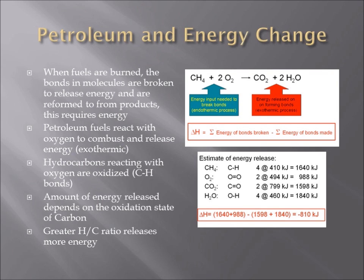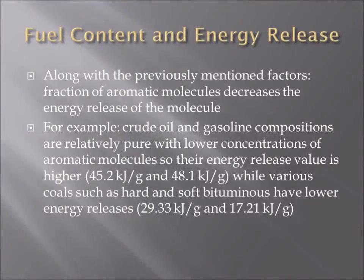The amount of energy released depends on the oxidation state of carbon. If the oxidation state is lower — in other words, there is a greater hydrogen-to-carbon ratio — then more energy will be released. The fraction of aromatic molecules in the fuel could also decrease the energy release. For example, crude oil and gasoline compositions are relatively pure with lower concentrations of aromatic molecules, so their energy release value is higher, while various coals such as hard and soft bituminous contain a higher concentration of aromatics, and therefore their energy release value is lower.